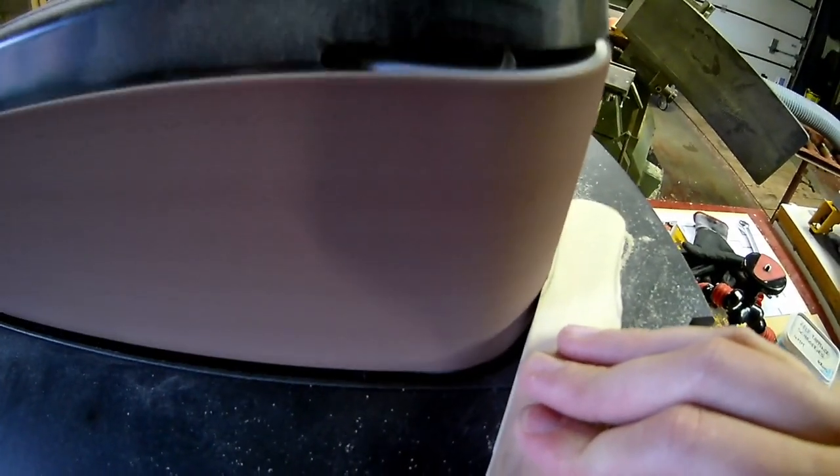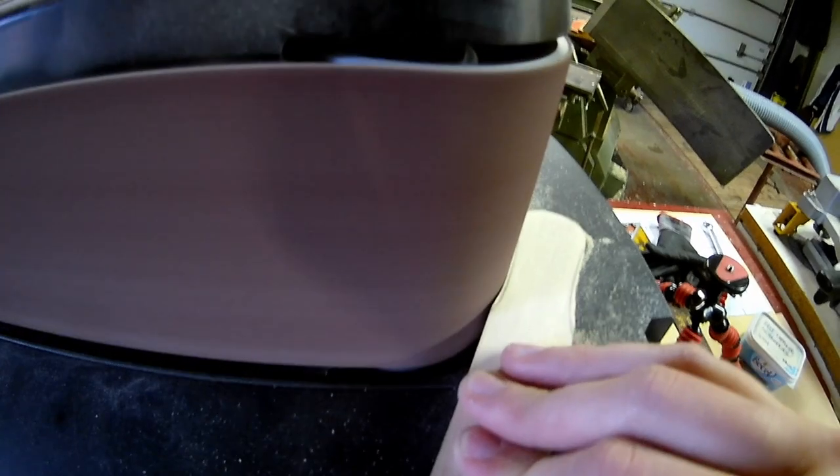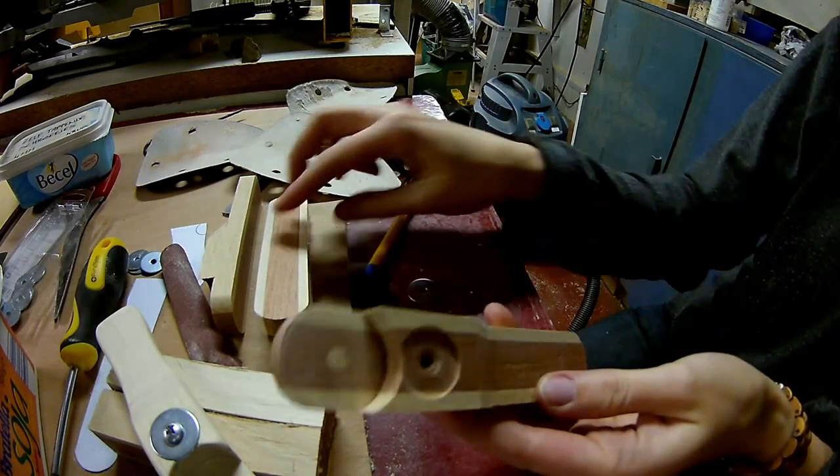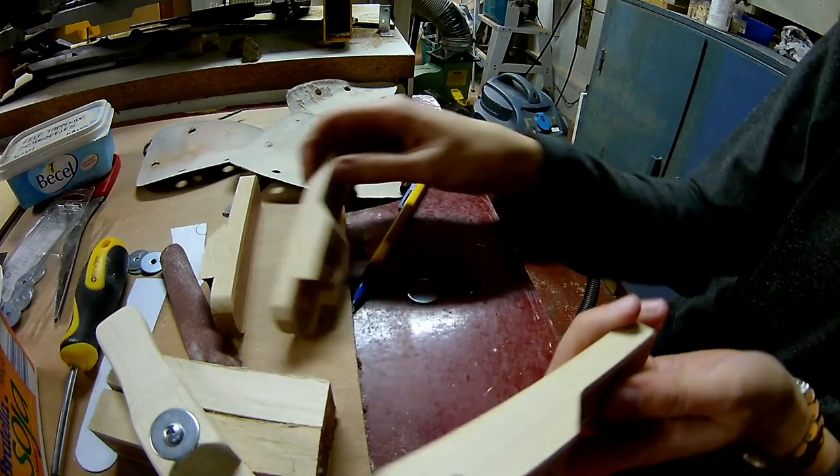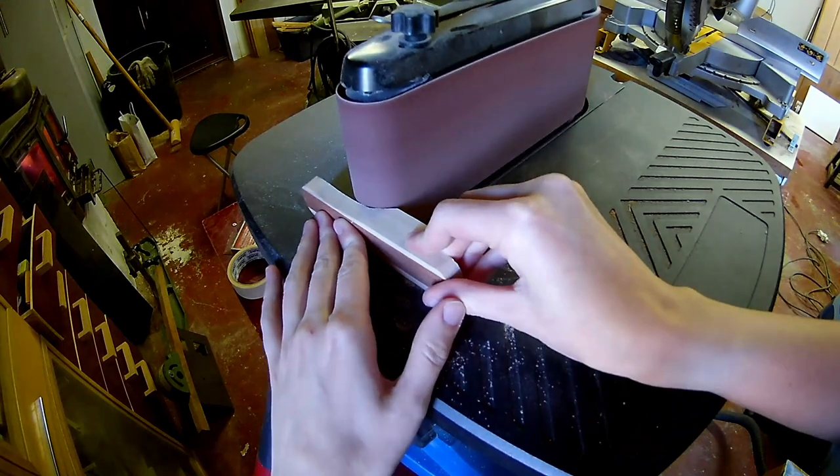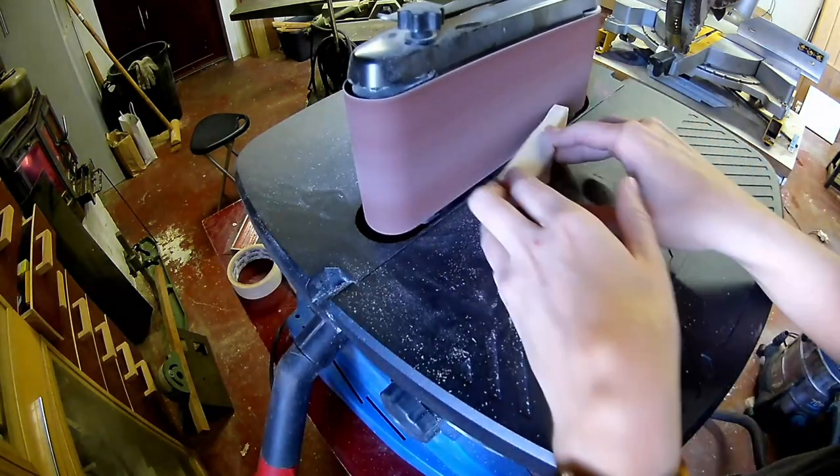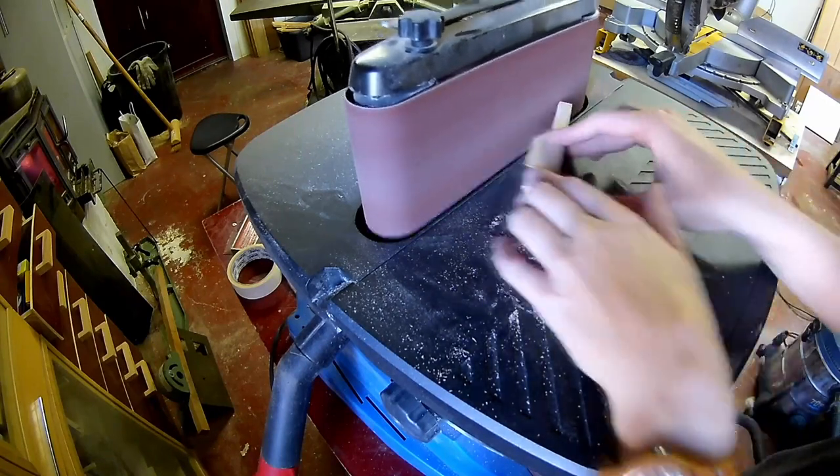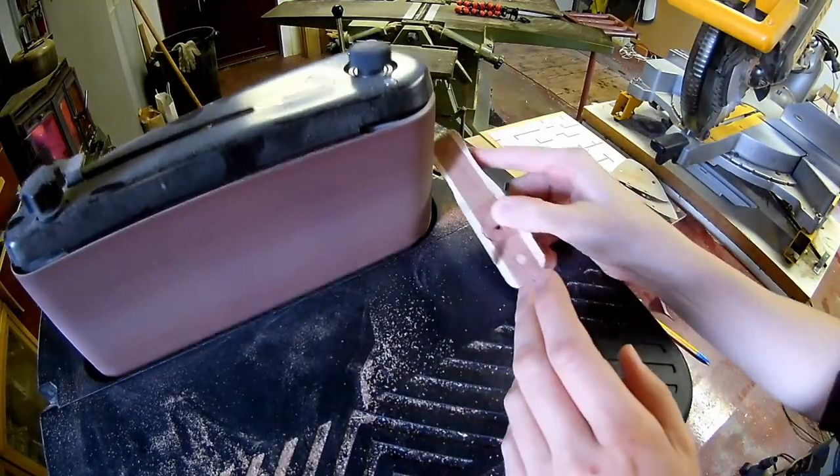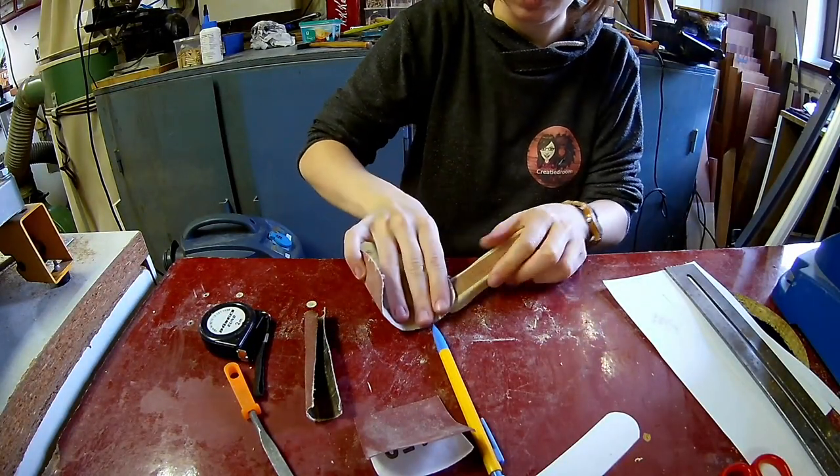Sanding smooth again on the belt sander. I've also made some bottle openers with contrasting wood. Final shaping on the belt sander. And we'll finish with some hand sanding.